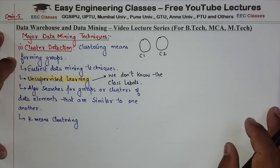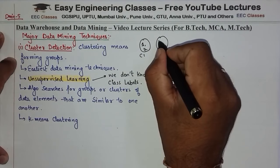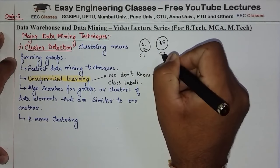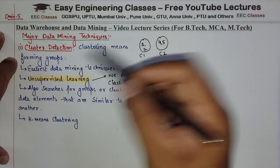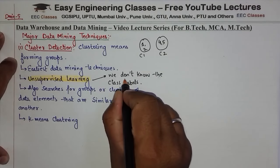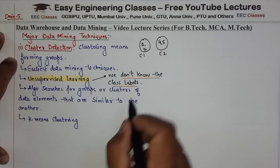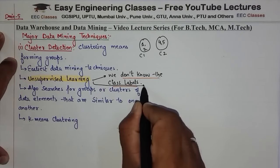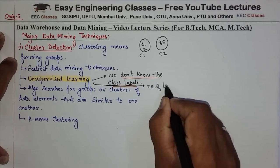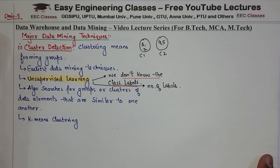I am building a class of college students. Student number 1 and 2 go to Cluster C1, and student number 4 and 5 go to Cluster C2. I am building this group but I don't know the labels — I have just named them C1 and C2. We also don't know how many groups will be formed. That is why this is called Unsupervised Learning. So, Clustering is Unsupervised Learning.